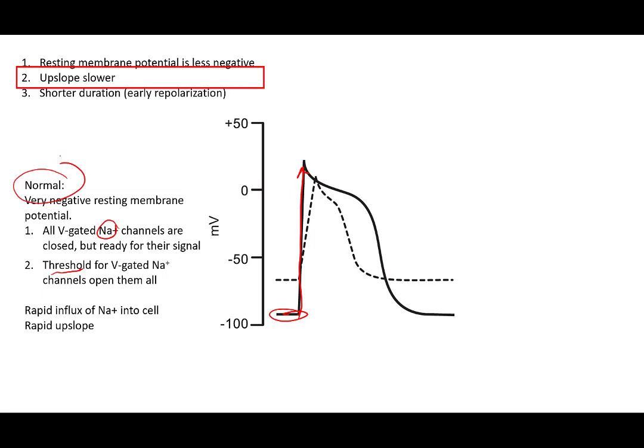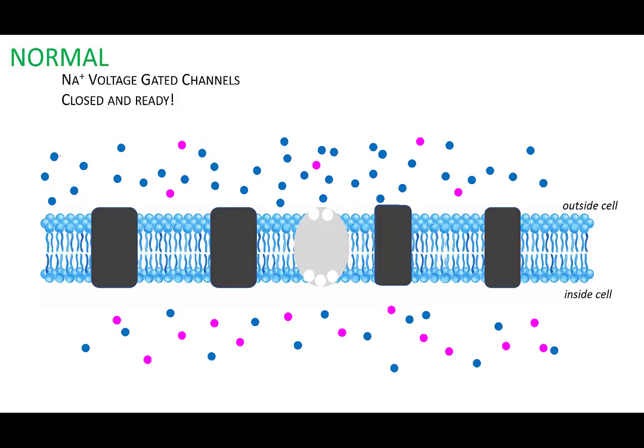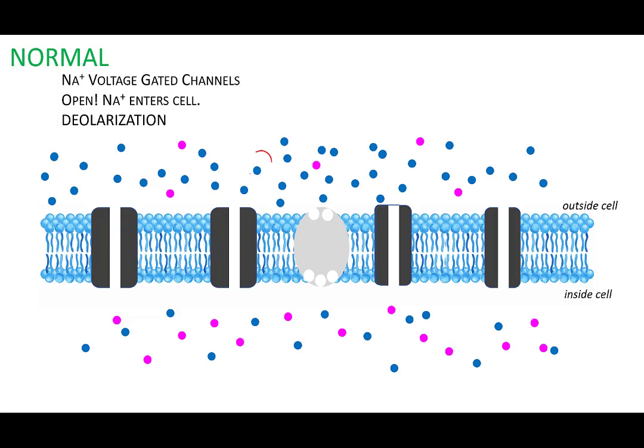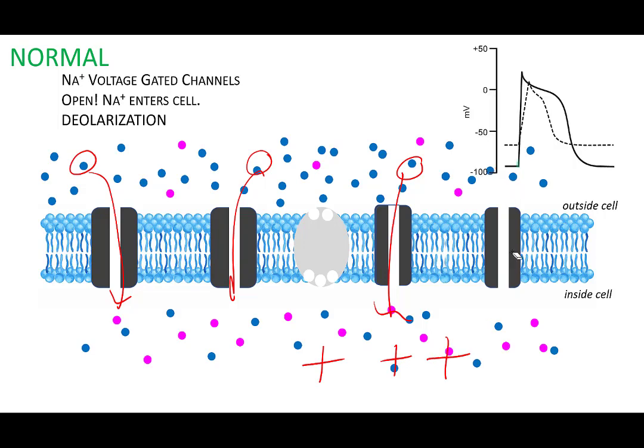So in a normal situation, we have a membrane where we have the outside of the cell and the inside of the cell. These black guys here are the sodium voltage gated channels. They're ready to go. All of a sudden, we're going to open. We have each of these voltage gated channels opening and then we have a bunch of sodium that's going to be entering the cell through these voltage gated channels making the inside way more positive. And it is this influx of sodium that causes a rapid depolarization of the action potential.